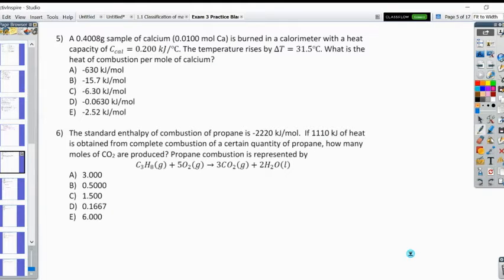0.01 moles of calcium is burned in a calorimeter, and so when we hear that, that should help guide us in the types of questions that we're looking at here. It says the heat capacity C_cal, so this is important to know to figure out what equation we use, is 0.200 kilojoules per degree Celsius and the temperature change by 31.5 degrees Celsius. What is the heat of combustion?